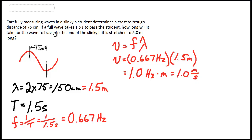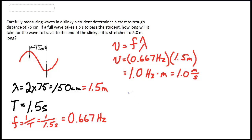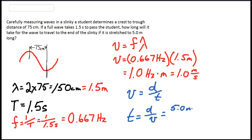Now we can continue with the question — it wants to know how long it takes, so we need to find time. The slinky is 5 meters long, and that's a generic distance, not a wavelength, so we go back to our general kinematics equation: velocity equals distance over time, or time equals distance divided by velocity. Our distance is 5 meters and our velocity is 1 meter per second, so it will take 5 seconds for this wave to traverse 5 meters across the slinky.